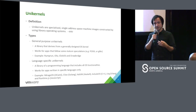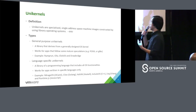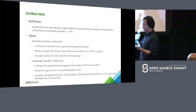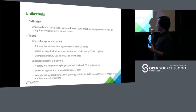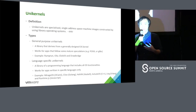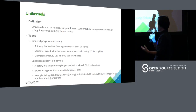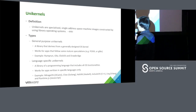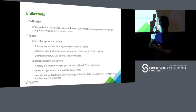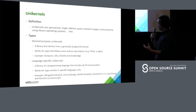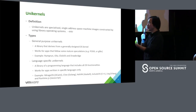I'd like to categorize unikernels into two groups. The first is the general-purpose unikernel — it's like a library but derived from a general OS, supporting POSIX-compliant programs. In this category we have Rump and OSv. The second is the language-specific unikernel, which is specific to one programming language. For example, MirageOS is written in OCaml, a very special language. So those are the two groups.